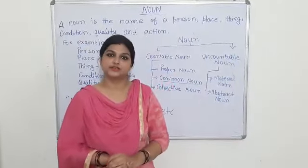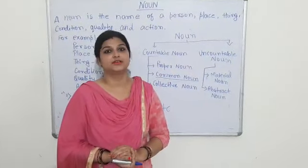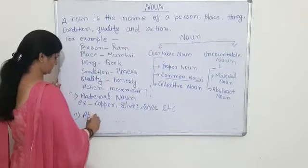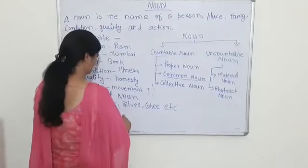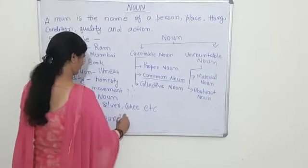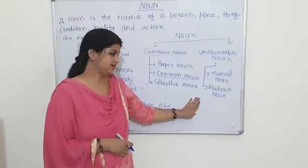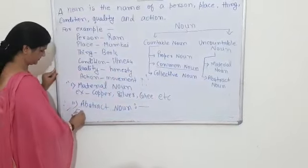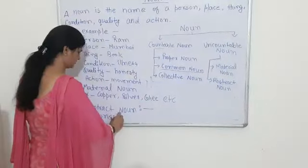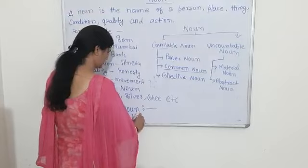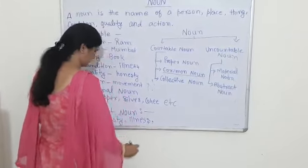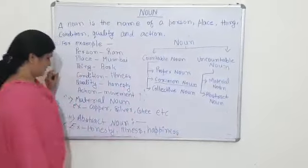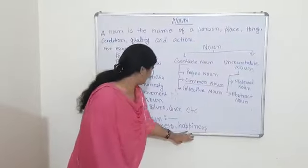For example: copper, silver. A noun which denotes quality, actions, movement, and condition comes under abstract noun. For example: honesty, illness, happiness. These are the examples of abstract nouns.